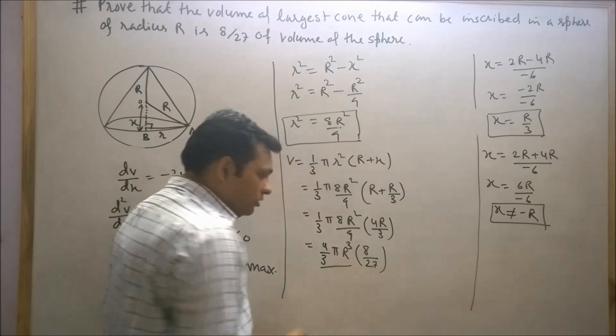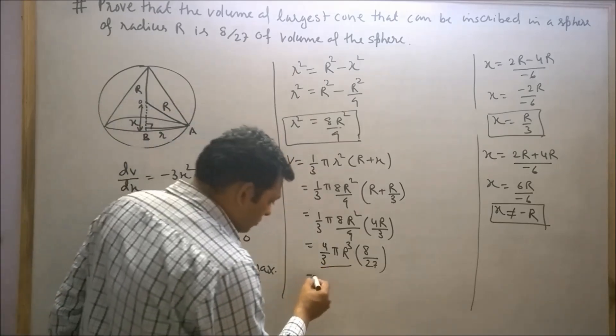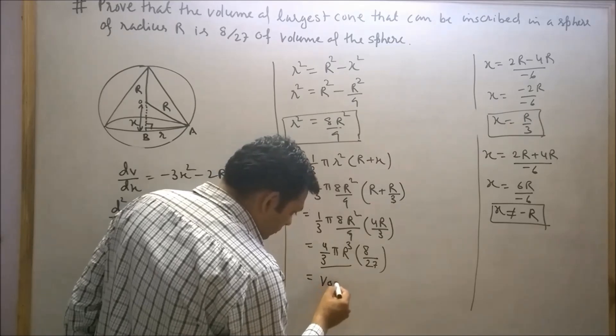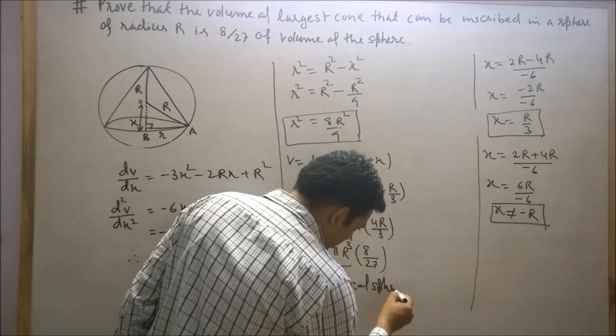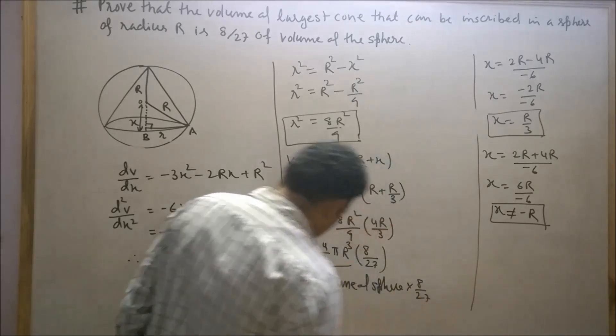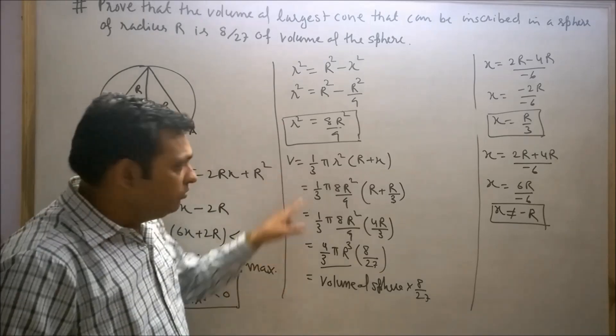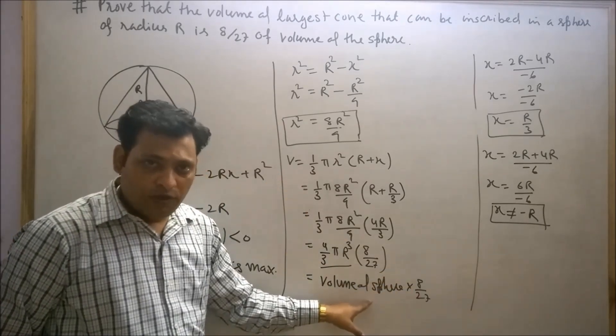So the volume of cone equals the volume of sphere times 8/27. Student, we have proved that the volume of cone is equal to 8/27 times the volume of sphere.